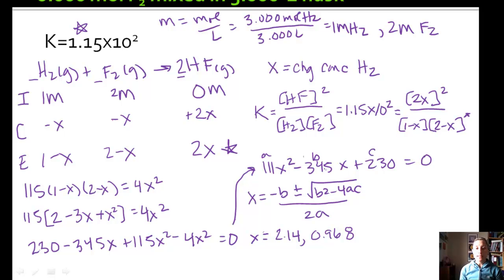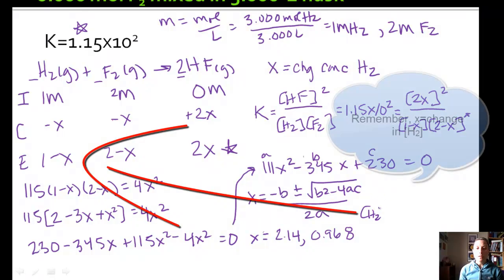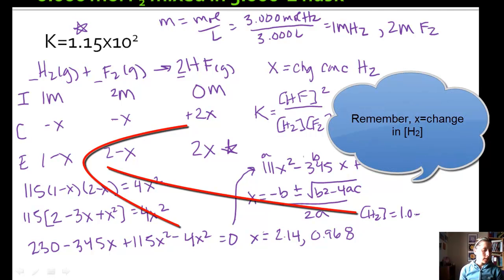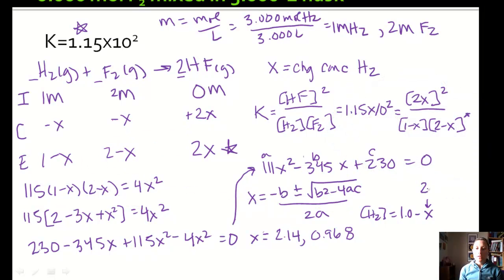Now we can't have two equilibrium values. We've got to figure out which one makes any sense. And if we look back at our initial equilibrium expressions, concentration of H2 is 1 minus X. And so X cannot be 2.14. That gives us a negative value. So we've got to go with 0.968. So if that's our X, then we can plug that X in to get all of our equilibrium concentrations.